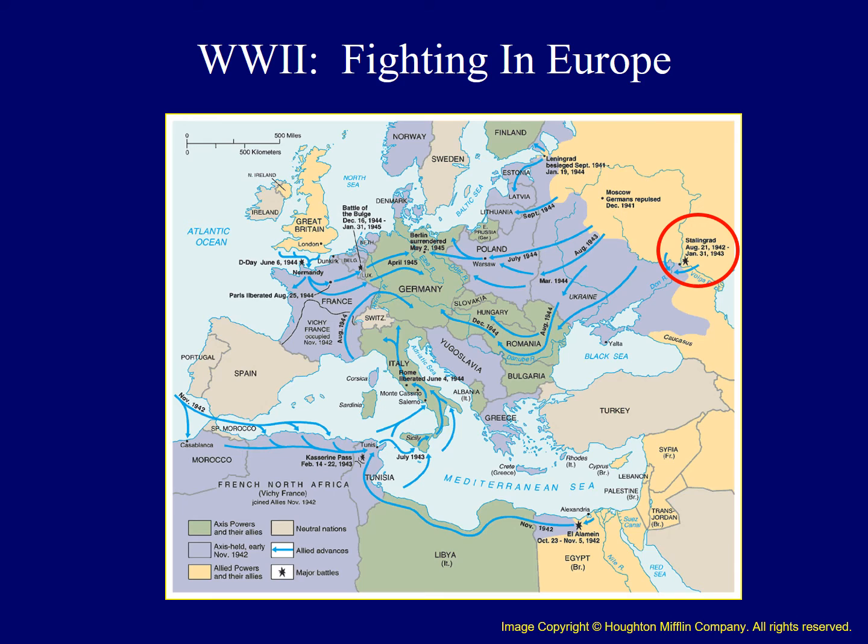This map identifies the location of Stalingrad in southern Russia. It was an important region strategically because of its proximity to Russia's oil reserves. If Germany had captured this territory, it would have severely damaged Russia's ability to fight.